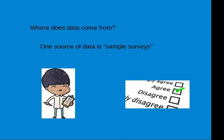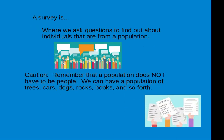But where do data come from? One source of data is from sample surveys. A survey is where we ask questions to find out about a population. Remember that a population in statistics does not have to be people. We can have a population of books, trees, cars, buildings, rocks, dogs, cats, and so forth.